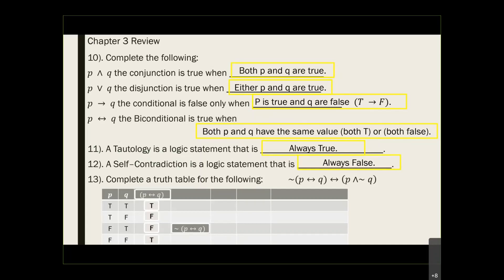Once we have the parenthesis column, we take the negation of that third column — if it's true the negation is false, if it's false the negation is true. That gives us our first item. Then for the second parenthesis, we need the negation of Q, which is just the opposite of Q: false, true, false, true.